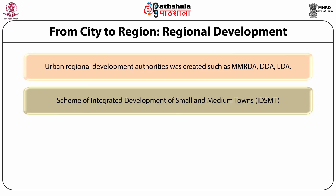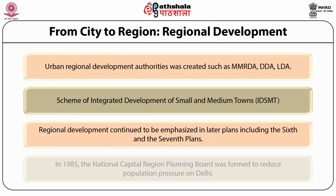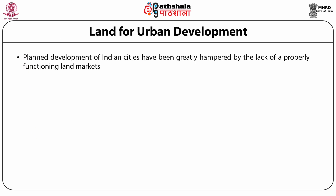The scheme proposed setting up new industries and commercial and professional establishments in small, medium, and intermediate towns. Regional development continued to be emphasized in the sixth and seventh plans. In the seventh plan period, the coverage was extended to 102 additional towns. In 1985, the National Capital Region Planning Board was formed to reduce population pressure on Delhi by dispersing population and economic activity to other urban centers within the National Capital Region, ensuring balanced development of the region as a whole.